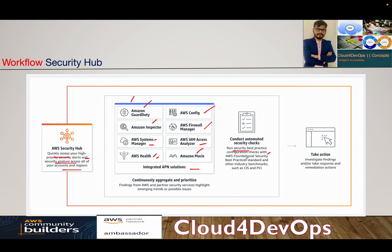Security Hub runs security best practices and configuration checks using frameworks like the CIS benchmark and PCI compliance. There are three compliance frameworks when you enable Security Hub — CIS, PCI, and I believe ISO, but we'll confirm in the demo. You can take action, investigate findings, respond, and remediate — either manually or by dumping data into Security Hub and acting on the findings. That's what the Security Hub workflow looks like.